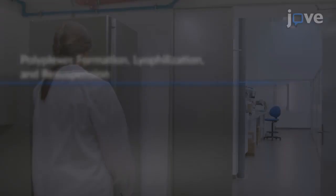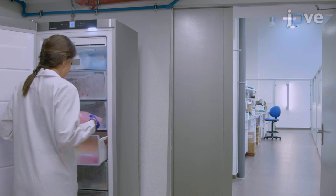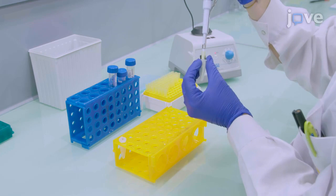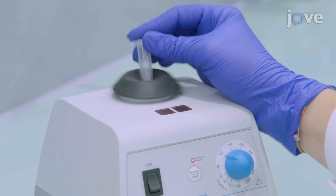For polyplex formation, thaw the previously prepared polymer C6-peptide poly-beta amino esters and vortex the solution. After pipetting the polymer mix up and down, prepare a 12.5 millimolar solution in sodium acetate. Vortex the solution and wait for 10 minutes.